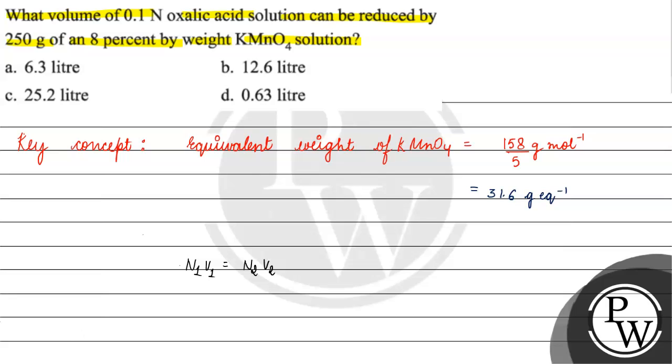Let's talk about N1. N1 is given to us as 0.1 normal. V1 we will take as X. N2V2 basically gives us the number of gram equivalents of KMnO4. We can calculate that another way.